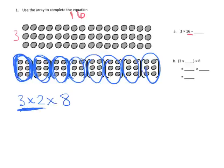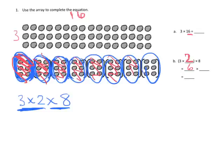3 by 2 gives us the small array, and times by 8 means we have 8 of those arrays aligned in a row. So we write in 2 here — 3 by 2 — and then we have 8 of them. Each small array has 6 dots: 6 dots here, 6 dots, 6 dots, 6 dots, 6 dots, 6, 6, and 6. We have 8 of those groups, so it's 6 times 8. And 6 times 8 is 48. So that means 3 times 16 is 48.